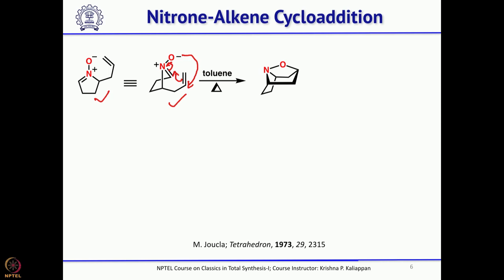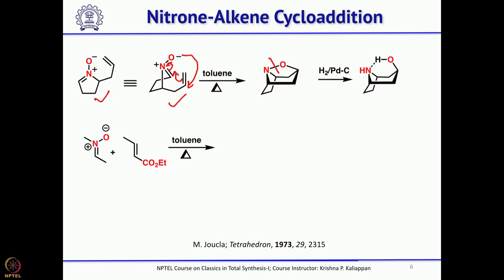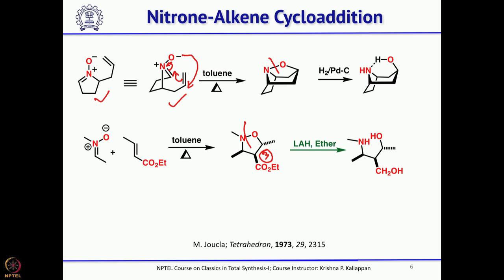This is an isoxazolidine, and the N-O bond can be easily cleaved with zinc, with hydrogenation conditions, or with LiAlH4 — that will give you the amino alcohol. Here is another example that is intermolecular, and still you can see 3 chiral centers. Three chiral centers can be fixed during this 1,3-dipolar cycloaddition depending on the nature of your substrate. If you cleave this N-O bond, that gives you the amino alcohol, and when you use LiAlH4, not only the N-O bond gets cleaved but also the ester, giving 2 hydroxyl groups — one primary and one secondary — plus a secondary amino group.